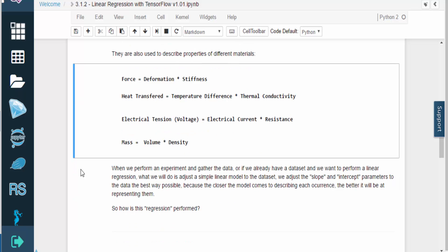When we want to perform simple linear regression on a collection of data, we need to adjust the slope and intercept parameters so that the resulting line fits the data points as accurately as possible.